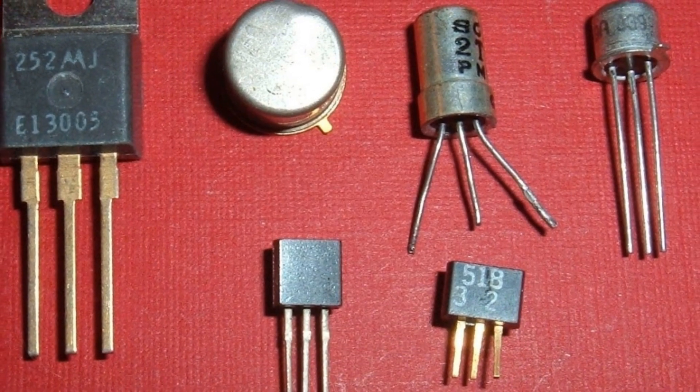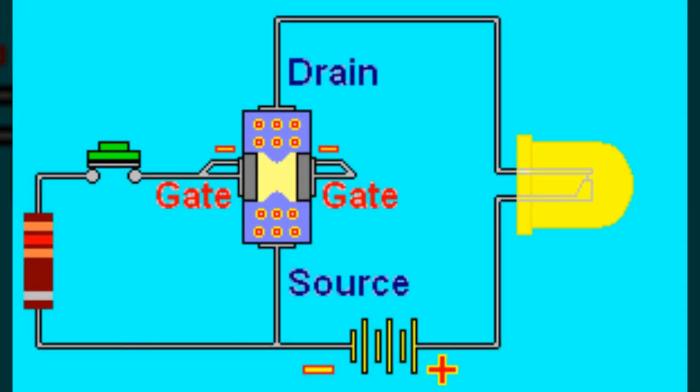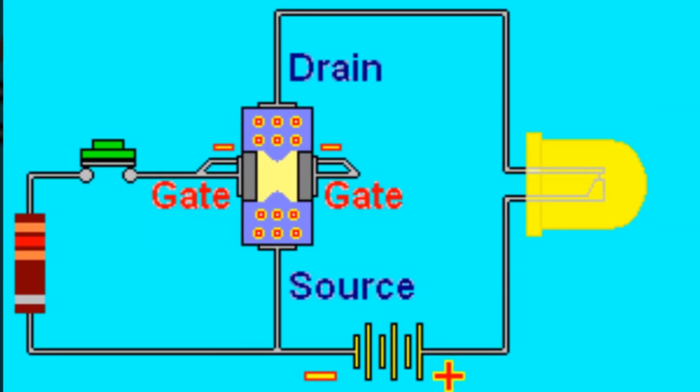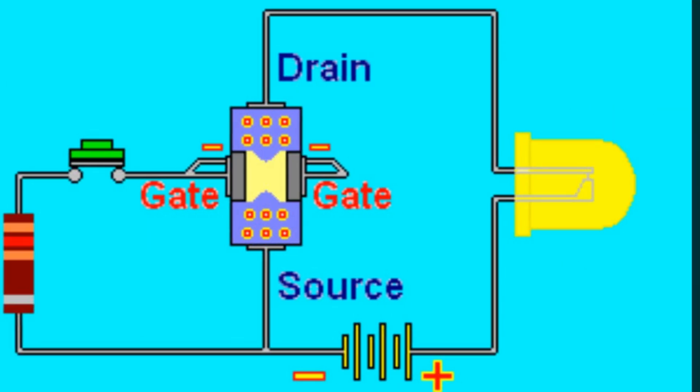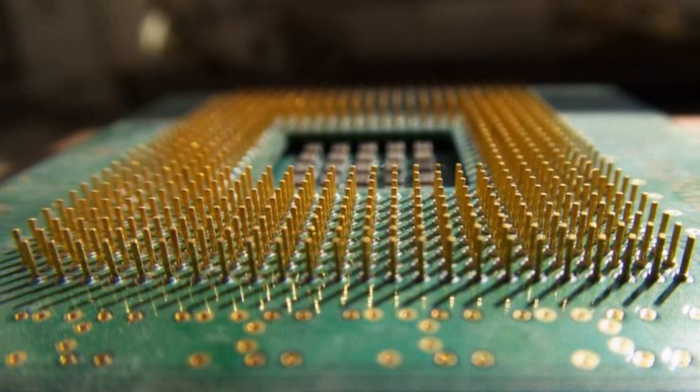Think of a transistor as the very heart of your electronic devices. They regulate current or voltage flow and act as a switch for electronic signals. This switch-like behavior is what makes digital electronics possible. Every bit of information, every one and zero that zips around inside your computer or smartphone, is controlled by millions of tiny transistors switching on and off.